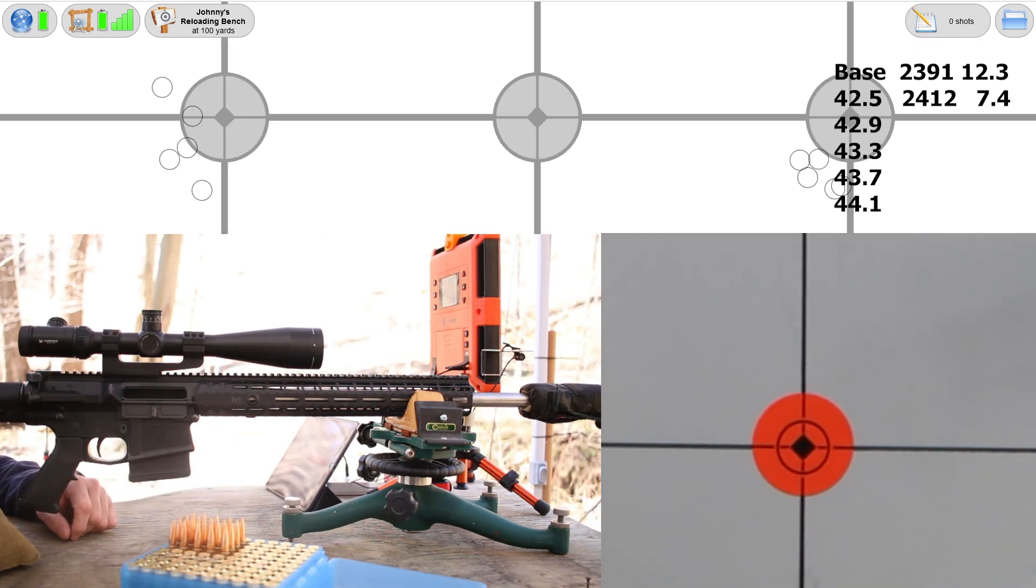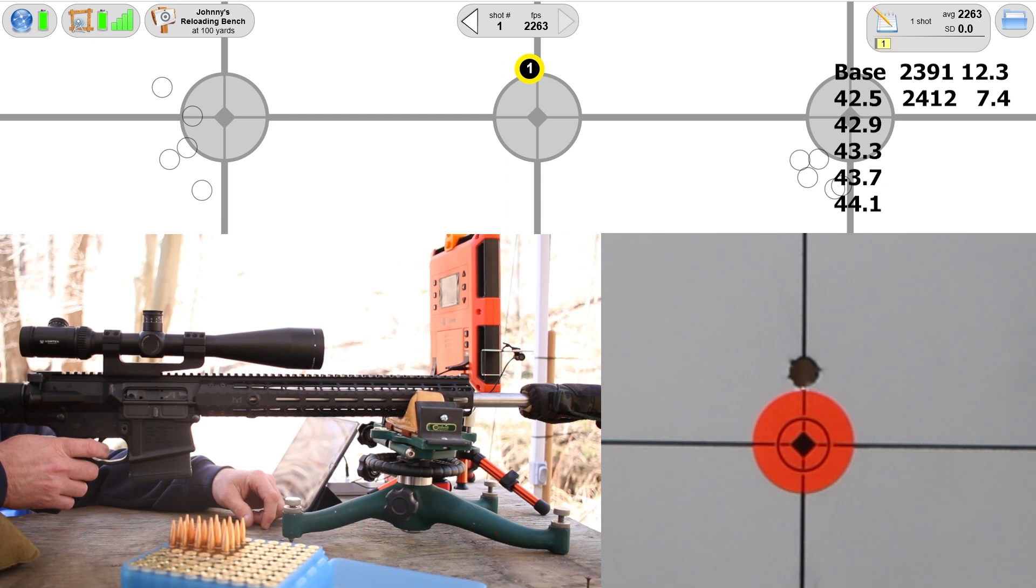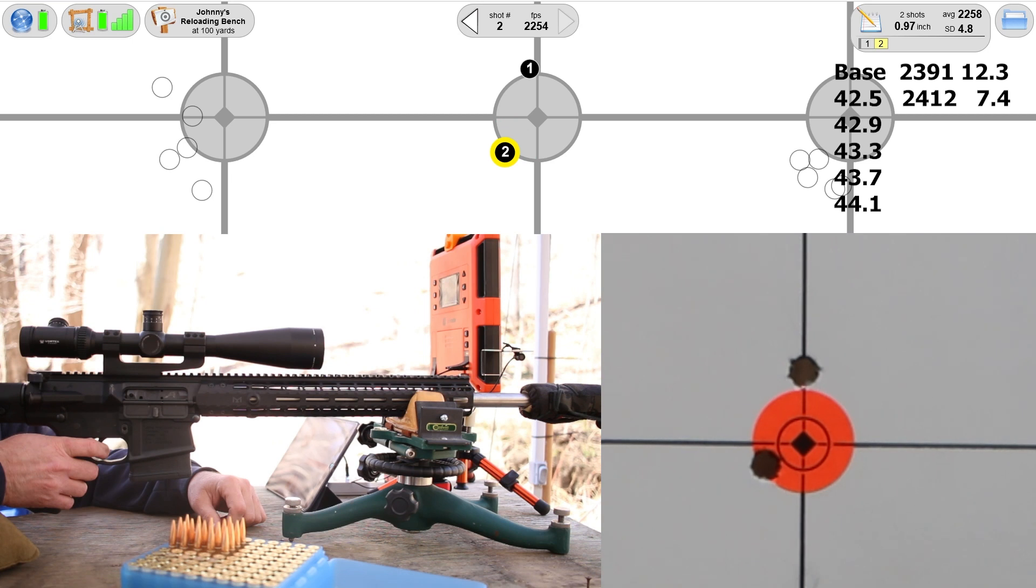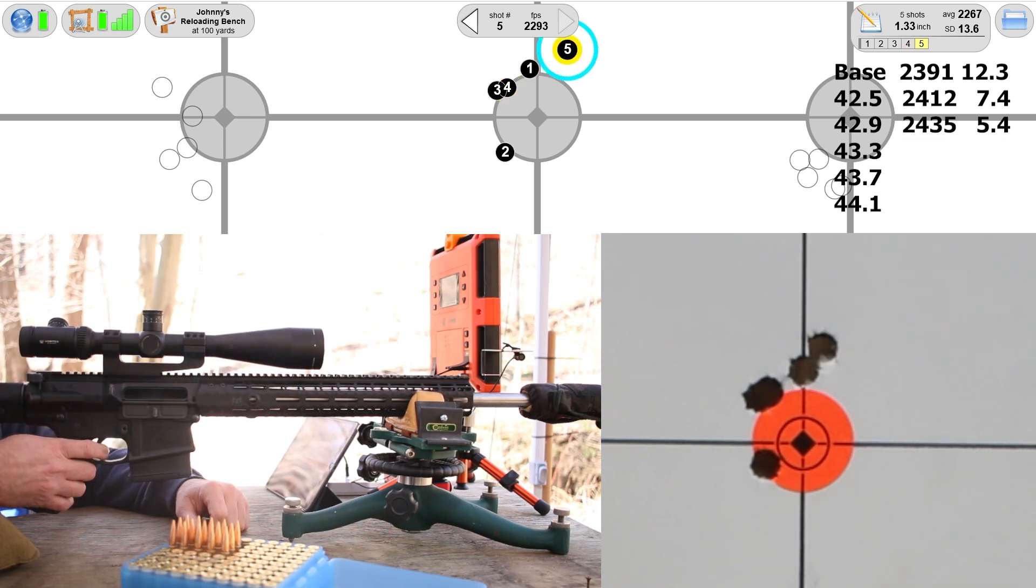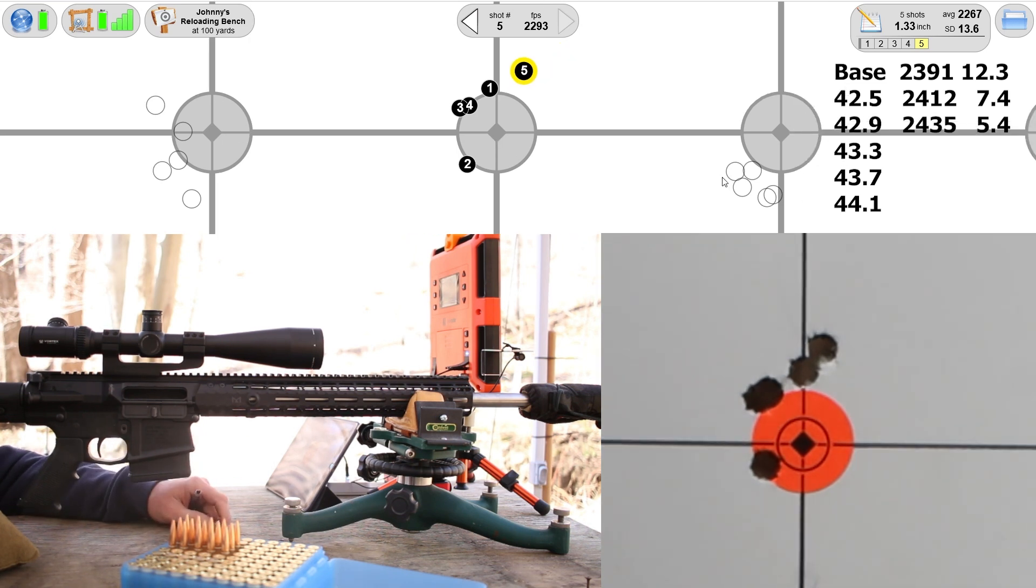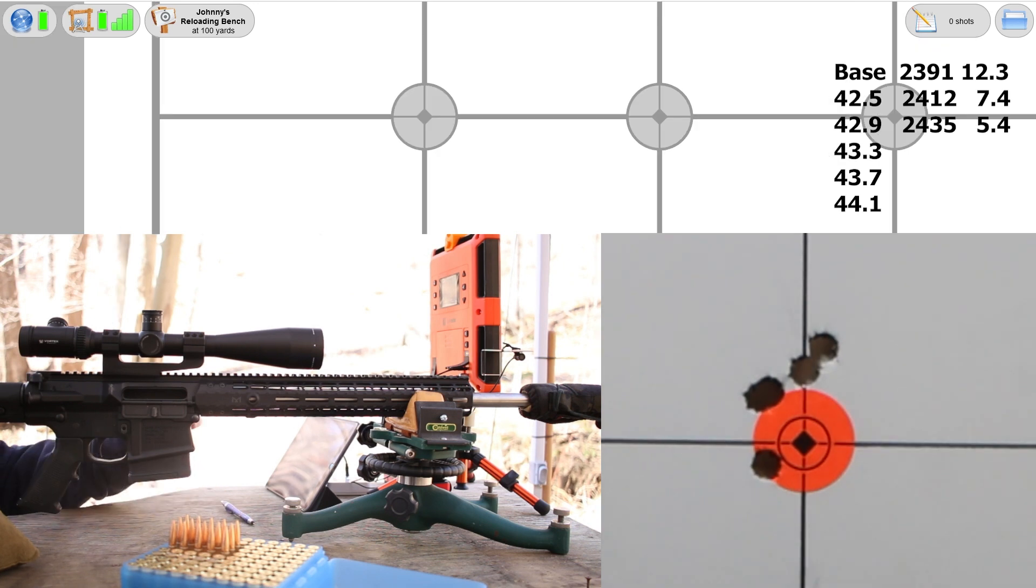Next up, 42.9 grains. Velocity up to 2435, standard deviation 5.4. I'm liking these SD numbers and these shots feel good. I guess we were spoiled by that Varget group, so we know the bullet and the gun can get along. But we just seem to be in a pretty wild region here. Brass looked good so let's keep going.